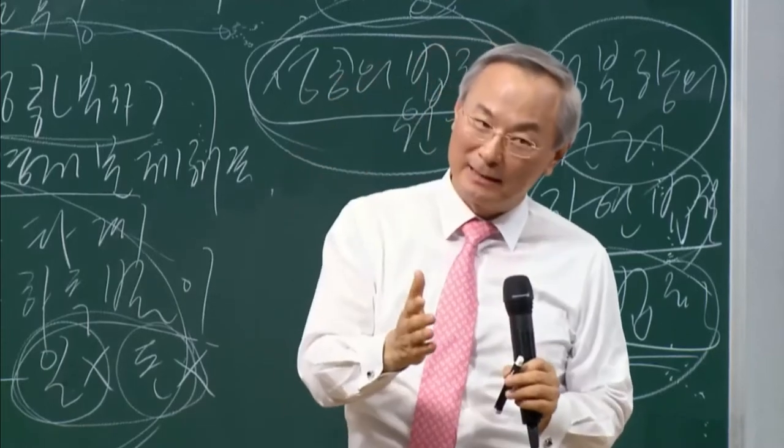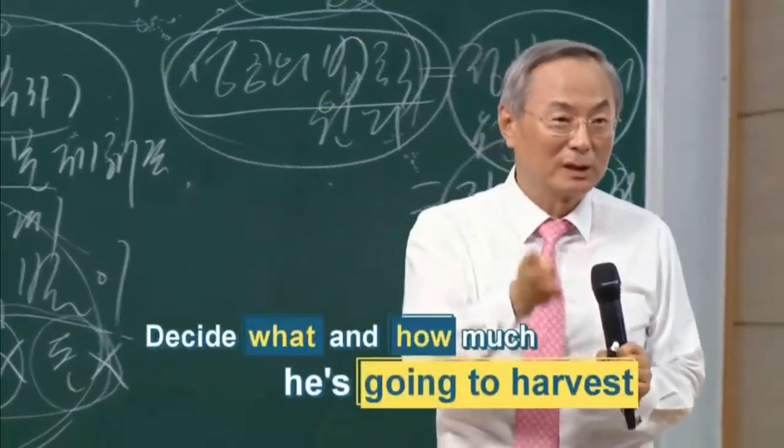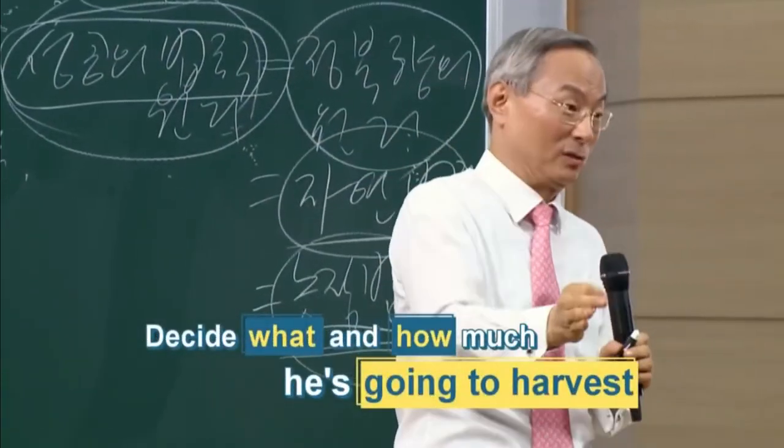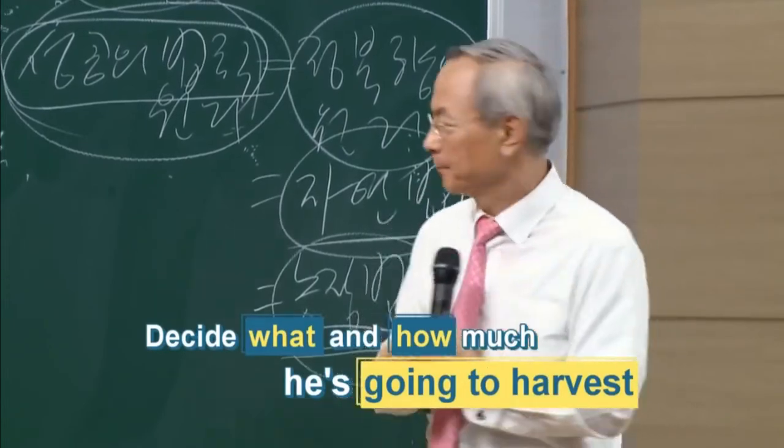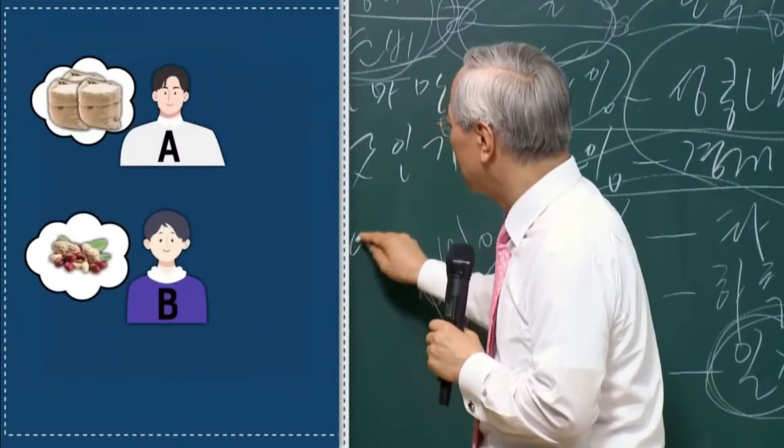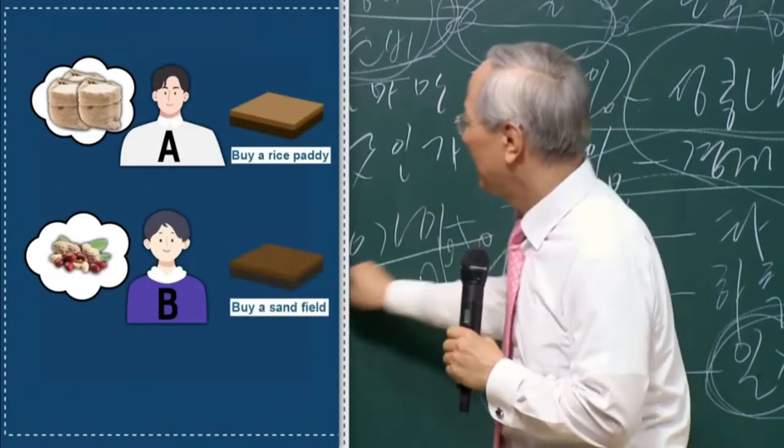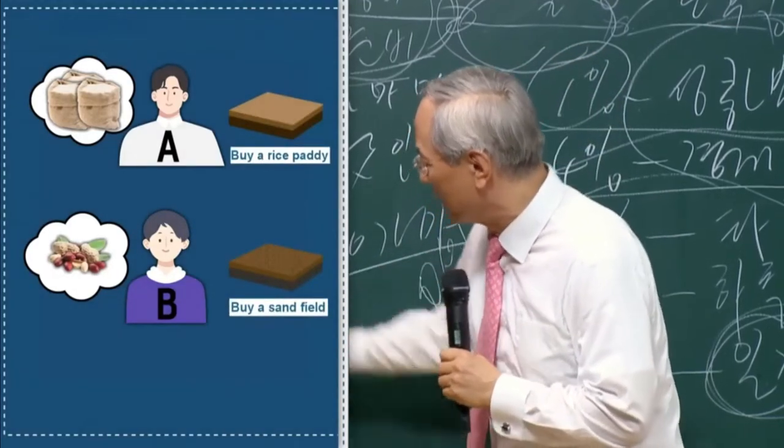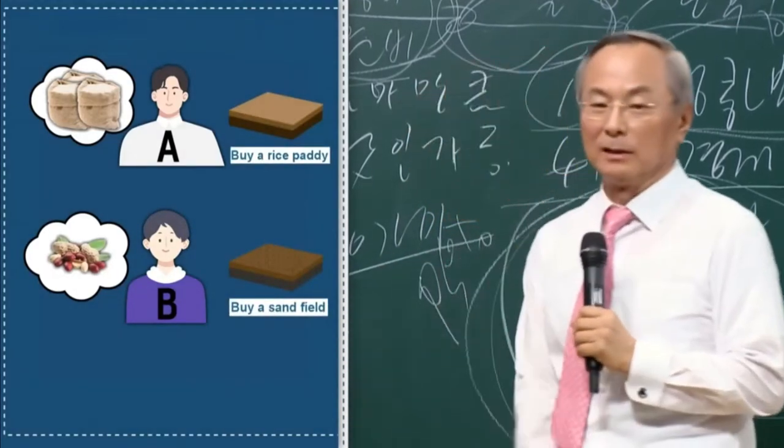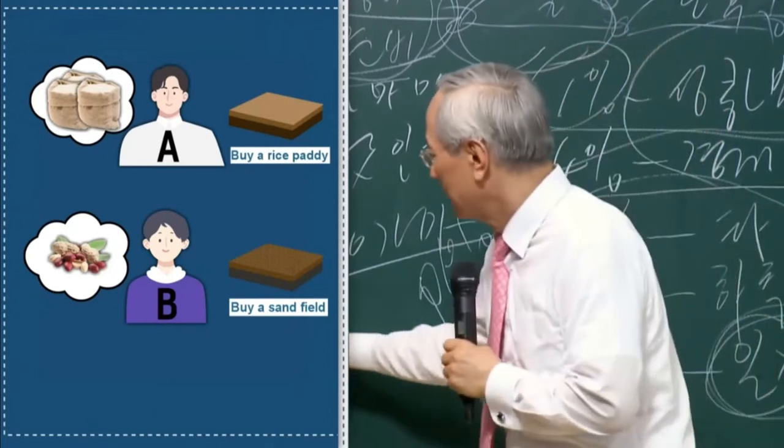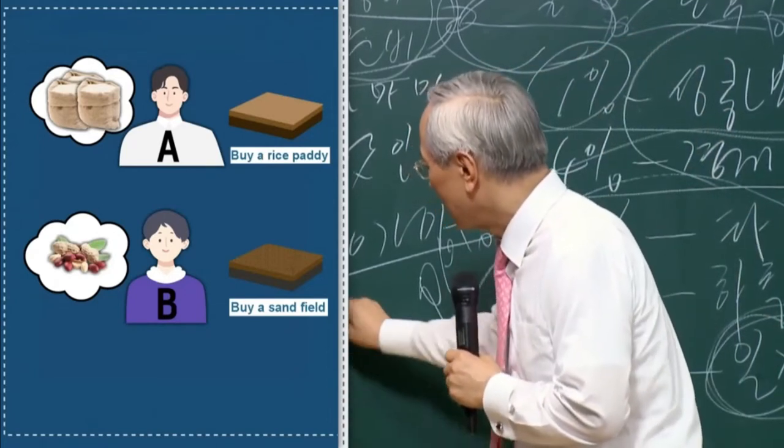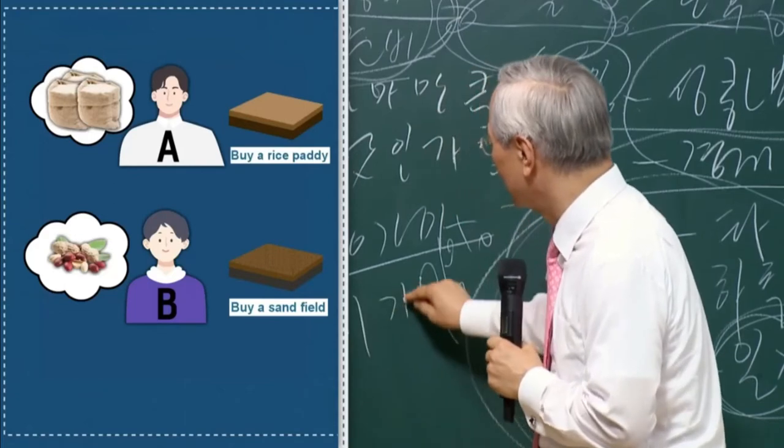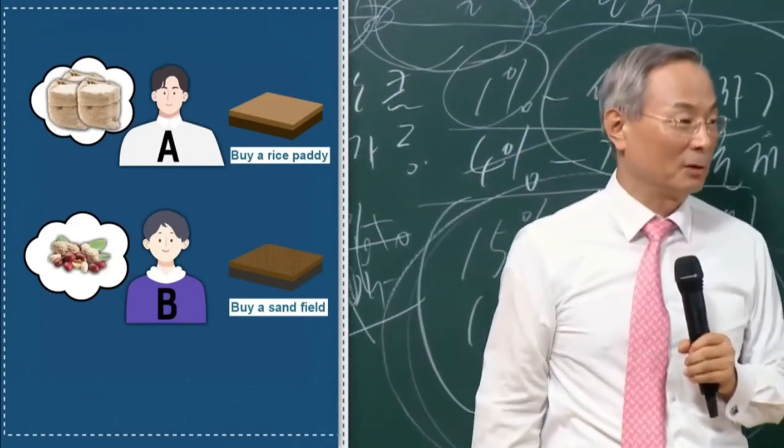The very first thing that he has to decide is what and how much he's going to harvest. So there's person A who wants to reap 10 bags of rice. Then there's person B who wants to reap a sack of peanuts. This came up in their minds first.